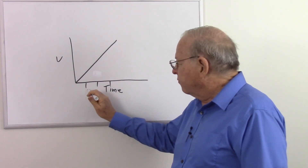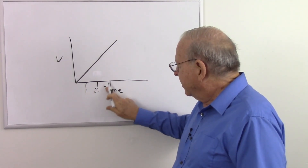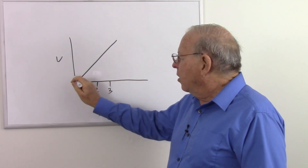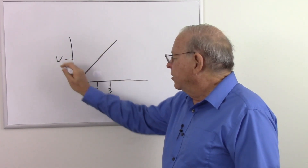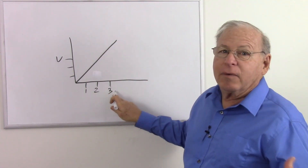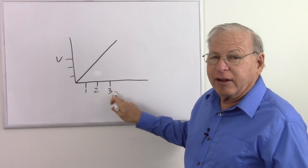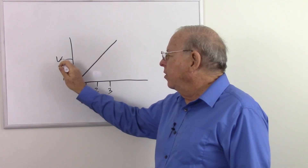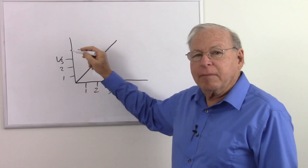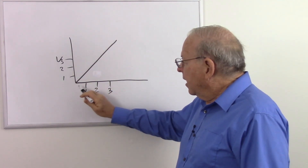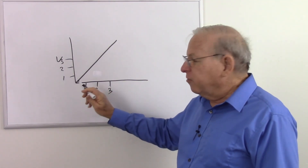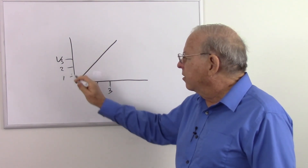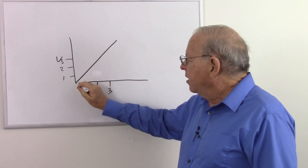Meaning that if we go equal intervals of time — one, two, three — whether that's seconds, milliseconds, or whatever — we would go up equal amounts of voltage. So one, two, three milliseconds, we go up one, two, three millivolts, so that it goes in a straight line over time.